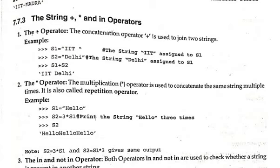Plus can be used for concatenation. S1 equals 'IIT', S2 equals 'Delhi', S1 plus S2 gives 'IIT Delhi'. The multiplication operator repeats the string a number of times. S1 equals 'hello', S2 equals 3 times S1 gives 'hello' three times.